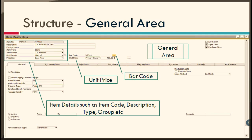Let us start with the item master data form itself. There is a general area with highlighted fields that we will understand one by one. Starting with the three checkboxes on the right-hand side: designating an item as an inventory item means it can be used in inventory transactions.